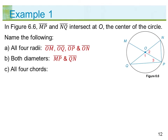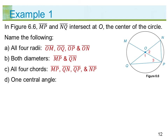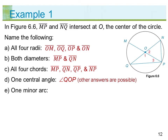C) All four chords: segments MP, QN, QP, and NP. D) One central angle: angle QOP — other answers are possible. E) One minor arc: arc NP — other answers are possible.